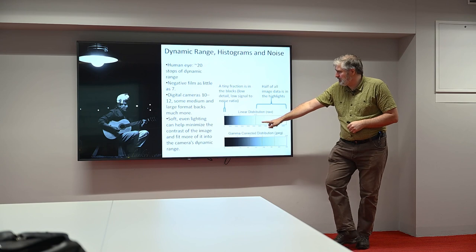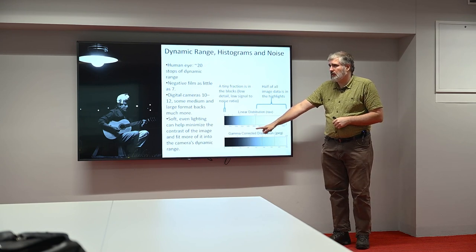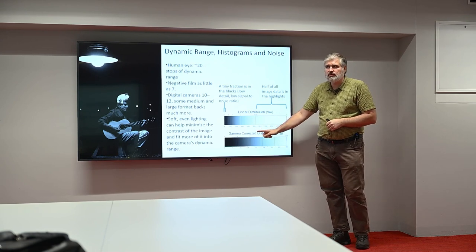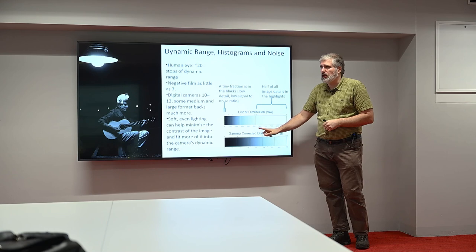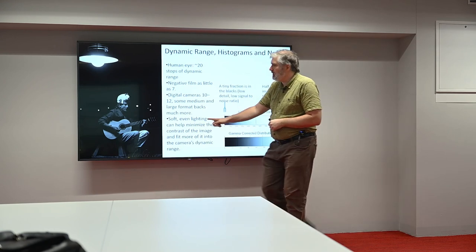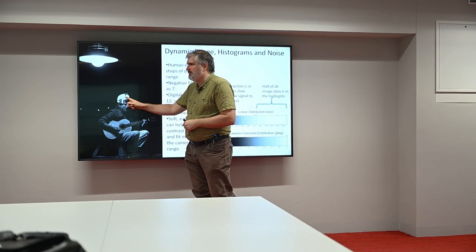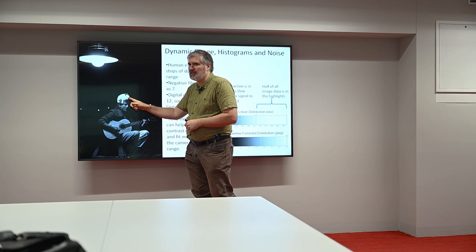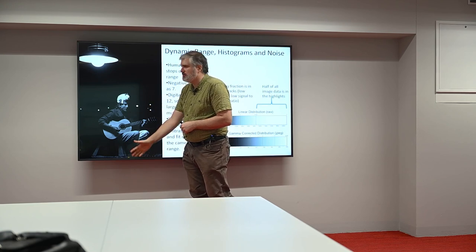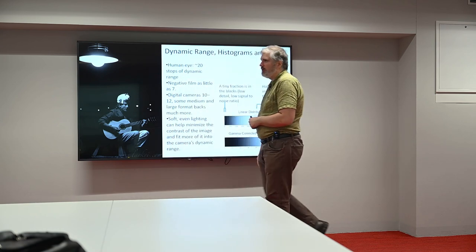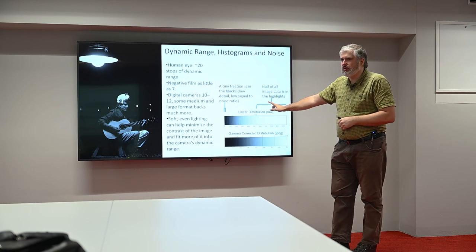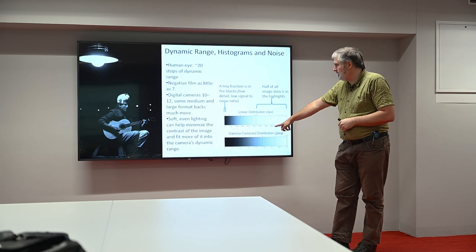So, that's because if we look at the linear distribution of what's happening, half of all the actual digital data is stored in the highlights. This rabbit has as much actual data in it as most of the rest of the image. Because overwhelmingly we capture detail in the highlights.